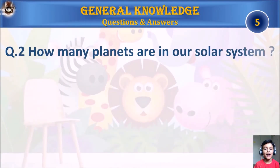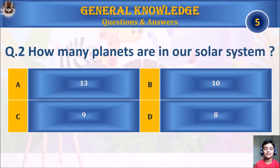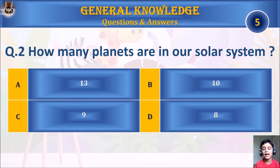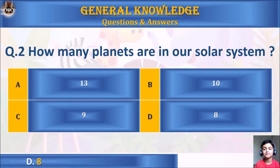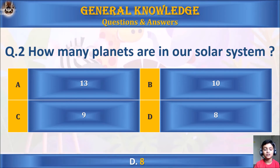Question 2: How many planets are in our solar system? A. 13, B. 10, C. 9, or D. 8. Your time starts. The answer is D. 8.